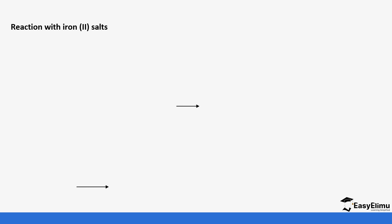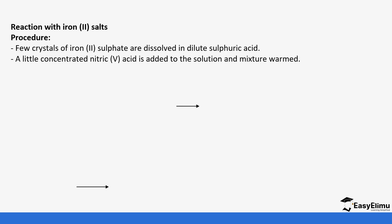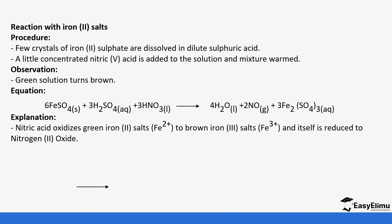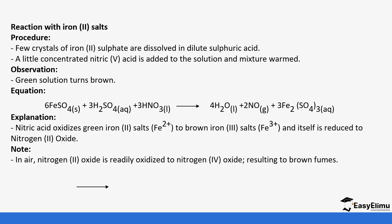Looking at the reaction with salts: when iron(II) sulfate is dissolved in dilute sulfuric acid and a little concentrated nitric acid is added to the solution mixture, the green solution turns brown. This is because of the oxidation of iron(II) sulfate to iron(III) sulfate. Iron(II) sulfate reacts with sulfuric acid and nitric acid to form iron(III) sulfate, and the nitric acid is reduced to nitrogen monoxide and water. Nitric acid also oxidizes iron(II) to iron(III), and itself is reduced to nitrogen monoxide and water.